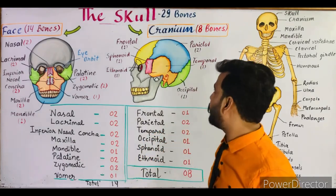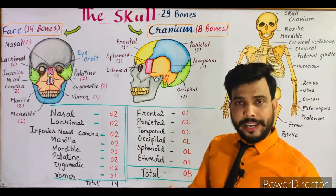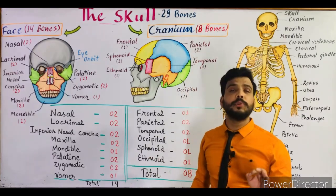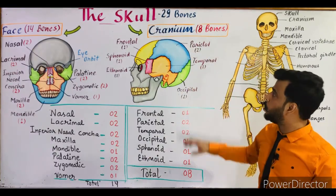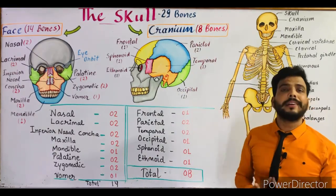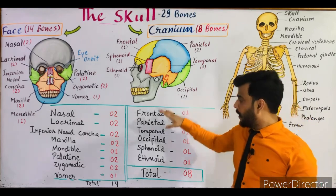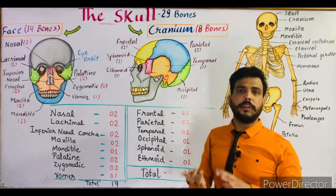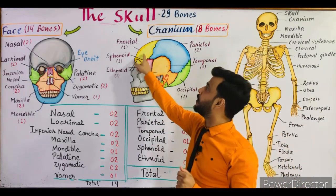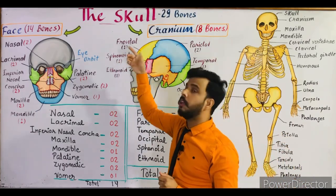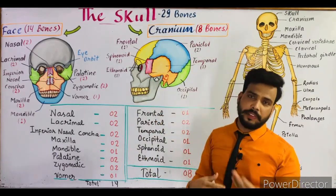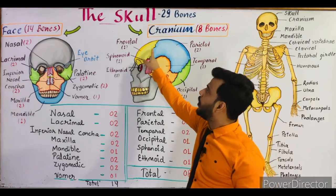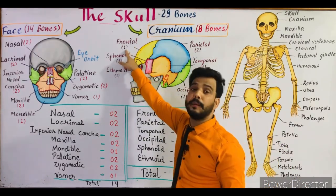Now we will talk about the cranium and the cranial bones. As I told you, there are a total of 8 bones present in the cranium. The front part of the cranium is made up of a bone known as the frontal bone — as the name describes, frontal means present in the front side. The frontal bone is single in number.